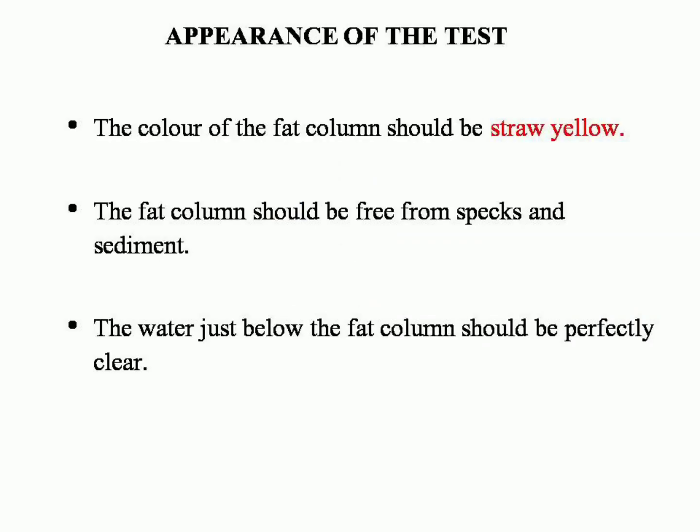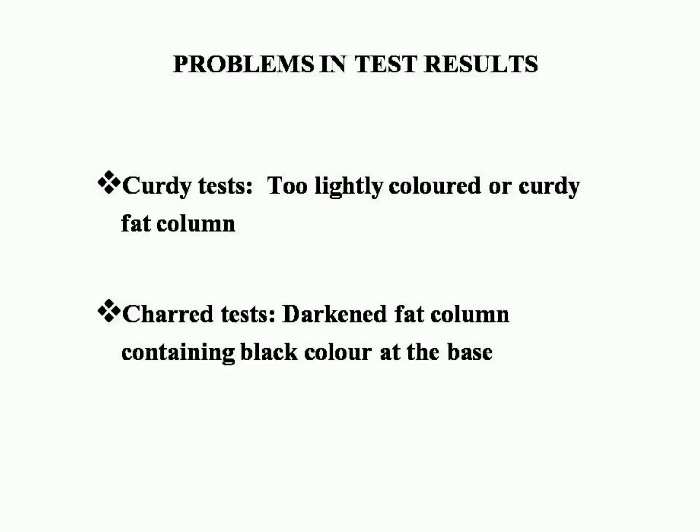In normal milk, the fat column is yellow and should be perfectly clear — this is the normal result. For poor quality milk, there are two abnormal results: first, a slightly colored fat column; second, a darkened fat column with a black base, indicating the milk has failed.